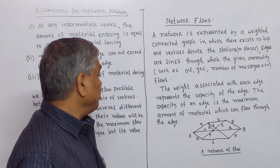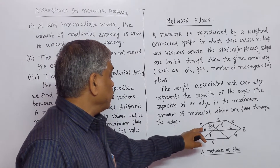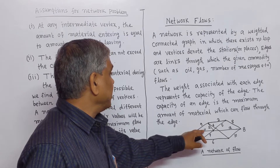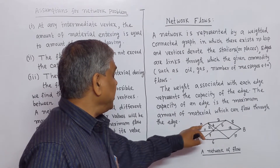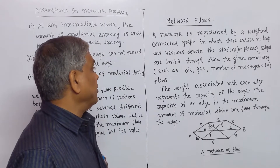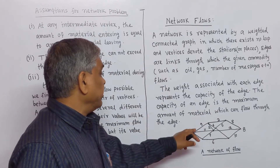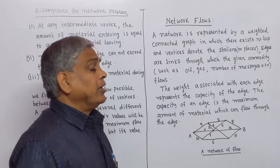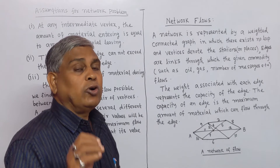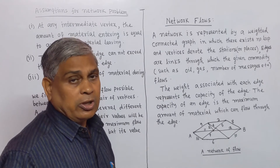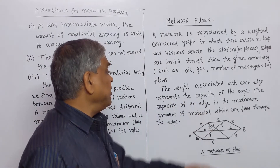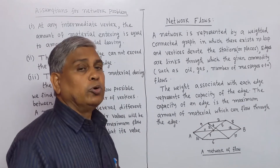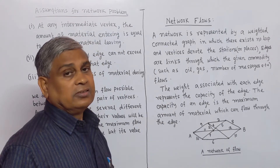For example, the weight of this edge is 9. That means the capacity of this edge is 9 — meaning through this edge, 9 units of commodity can flow. The capacity of an edge is the maximum amount of material which can flow through the edge.